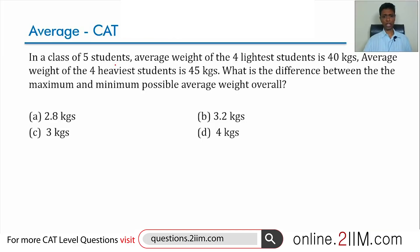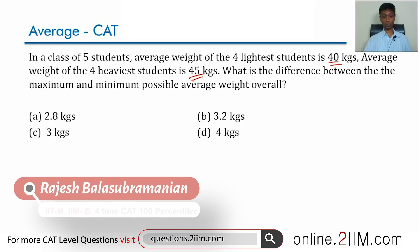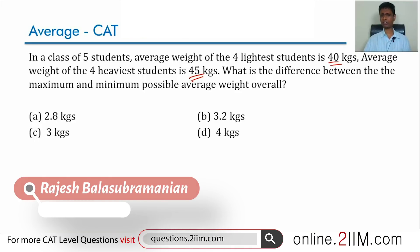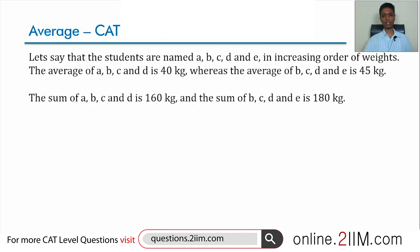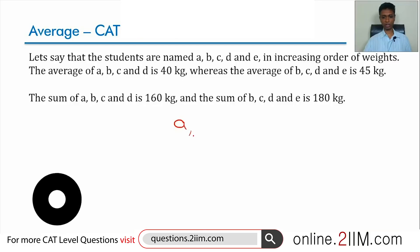In a class of five students, the average weight of the four lightest students is 40, and the average weight of the four heaviest students is 45. What is the difference between the maximum and minimum possible overall average? We can capture the data slightly differently and build from there. Let's say we have a, b, c, d, e as the weights in increasing order.